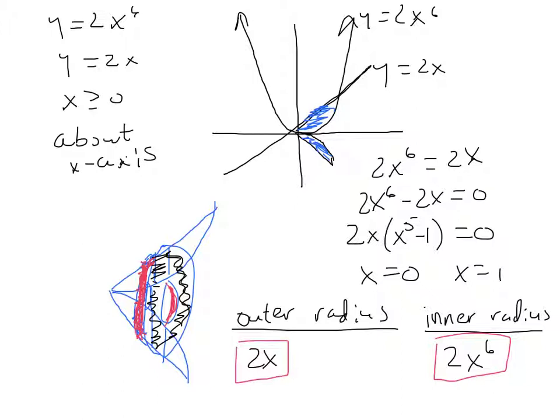The job is to take the region bounded by y equals 2x to the sixth, y equals 2x, x greater than or equal to zero, and then rotate that about the x-axis to wind up with a solid. We are to find the volume of that solid.